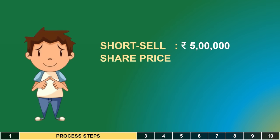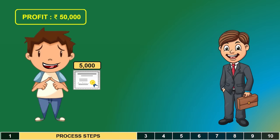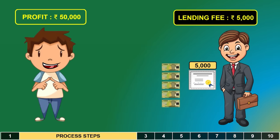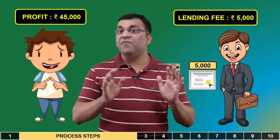Fortunately for Mr. B, the share price dropped from 100 to 90 rupees by end of month. Mr. B buys back the 5,000 shares at 90 rupees, yielding a profit of 50,000 rupees. He then returns the 5,000 borrowed shares to Mr. A and pays the 1% lending fee on the 5 lakh principal, which comes to 5,000 rupees. This leaves Mr. B with a net profit of 45,000 rupees. So A made money, B made money, and everyone's happy.